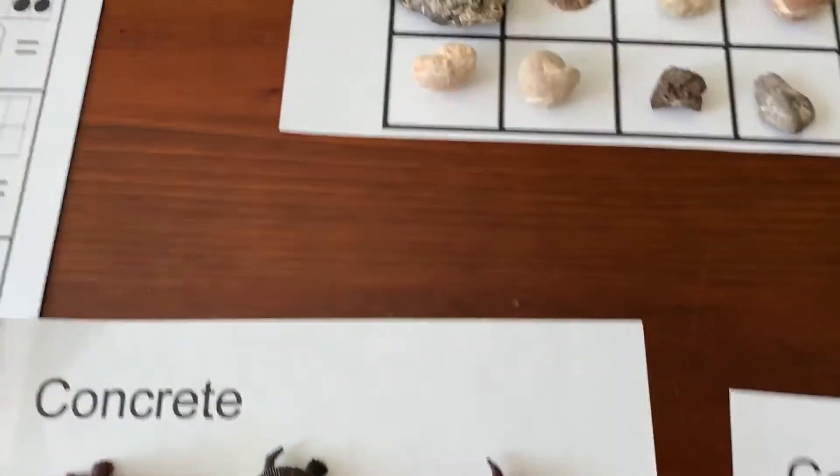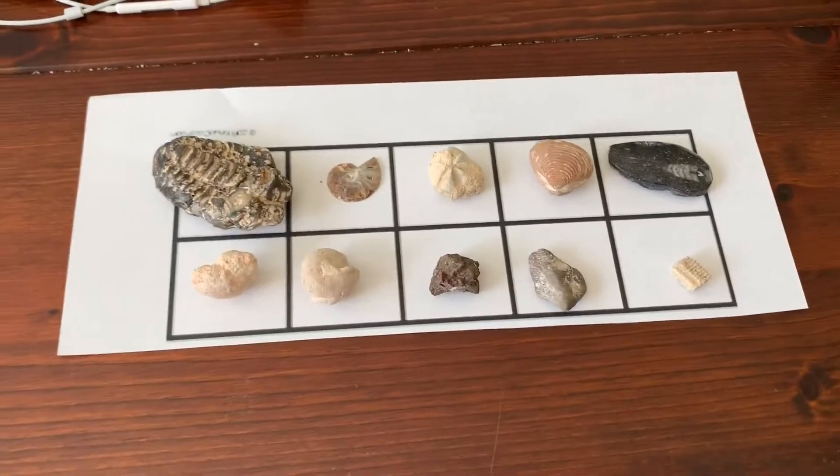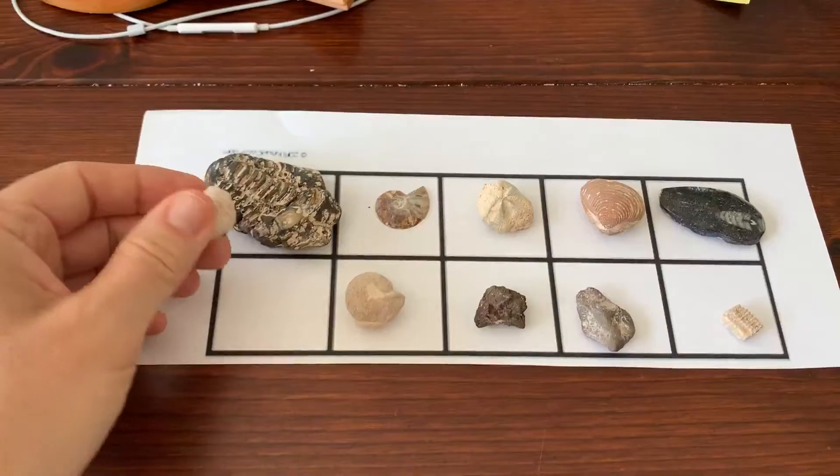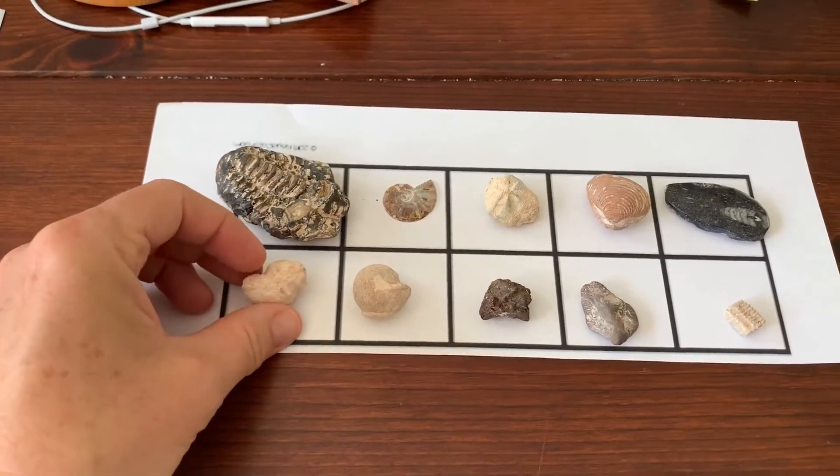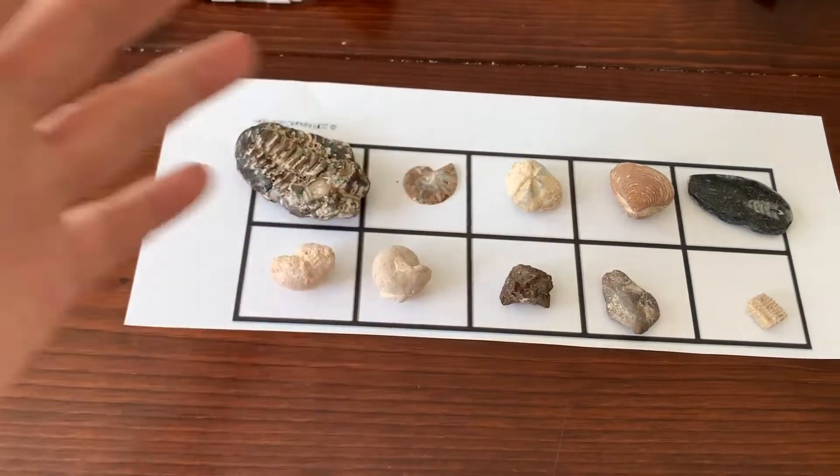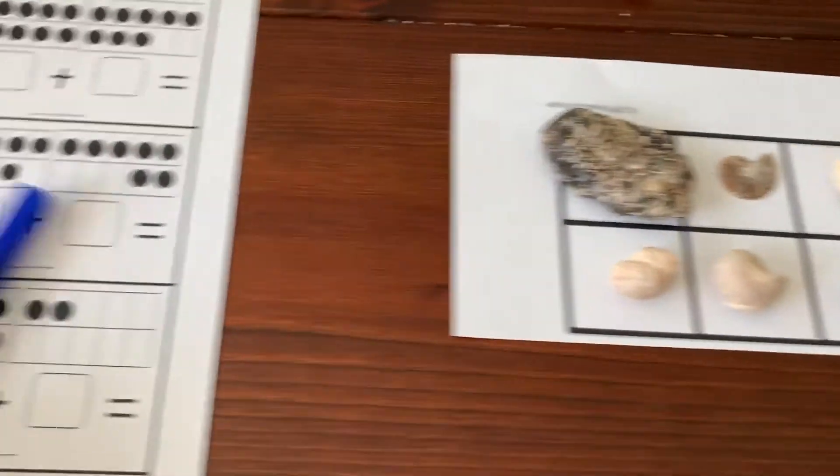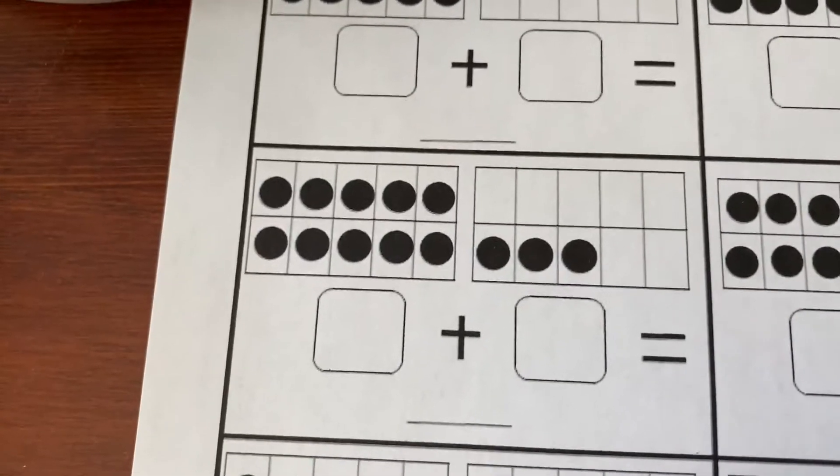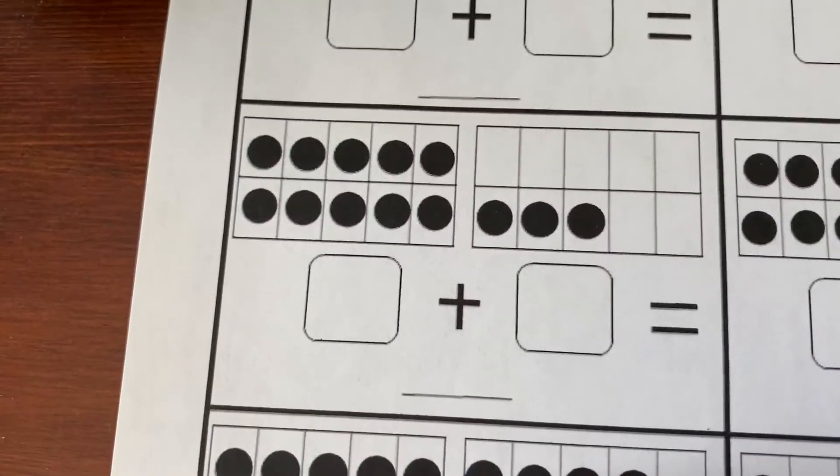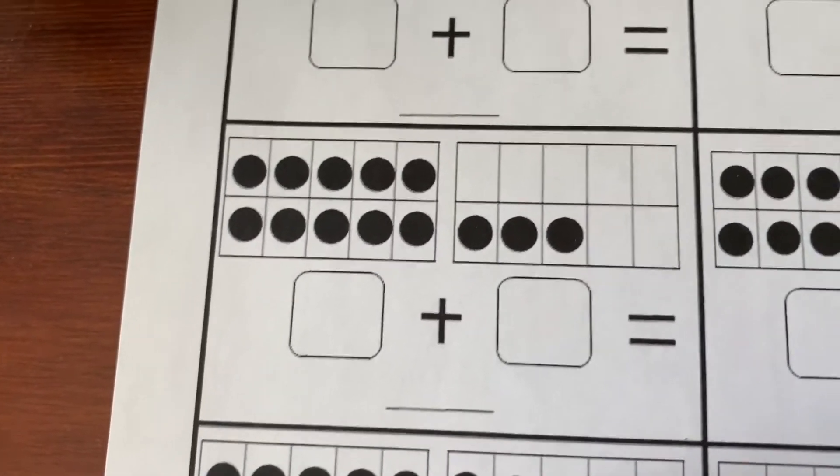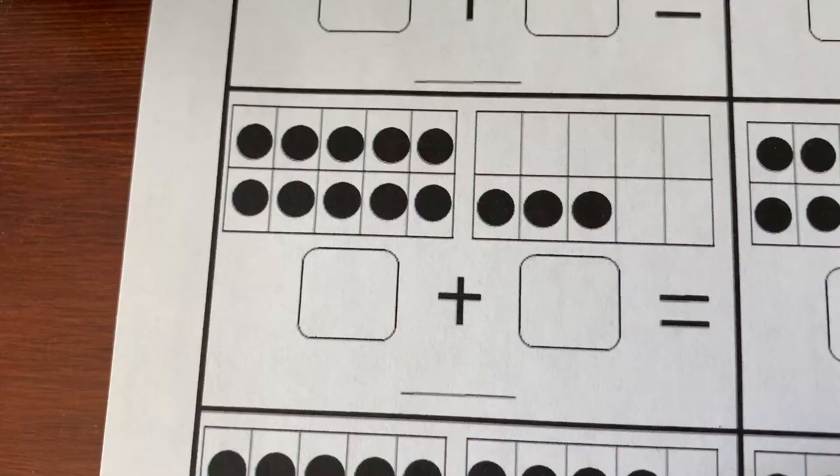Here's another example of the progression. Here's a 10-frame with 10 counters. That would be the concrete way of counting in a base-10 system. Pictorial would go to something like this. On this worksheet, we have a 10-frame just with dots filled in, just a picture.